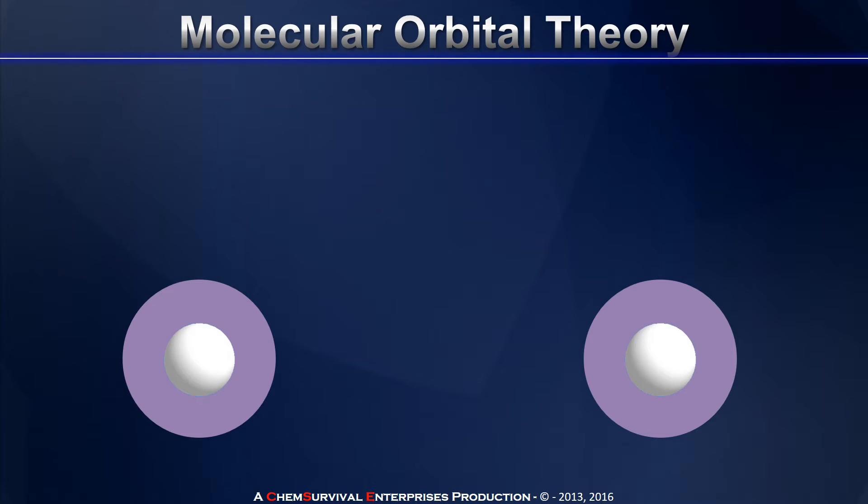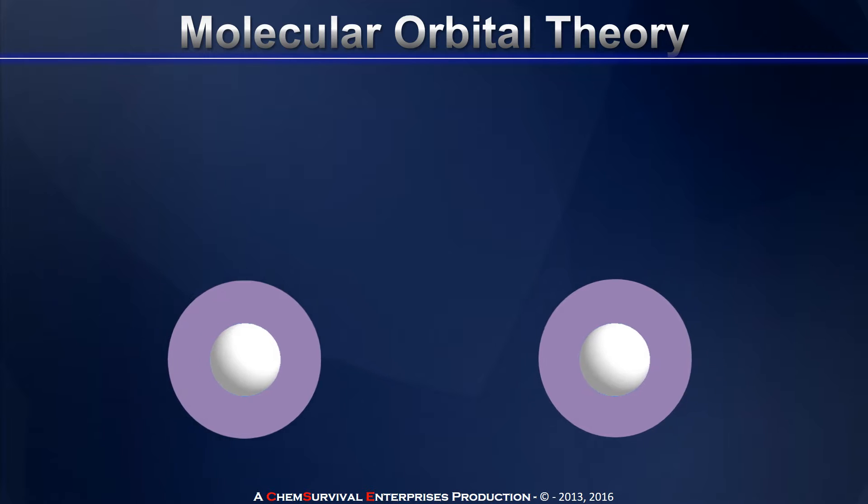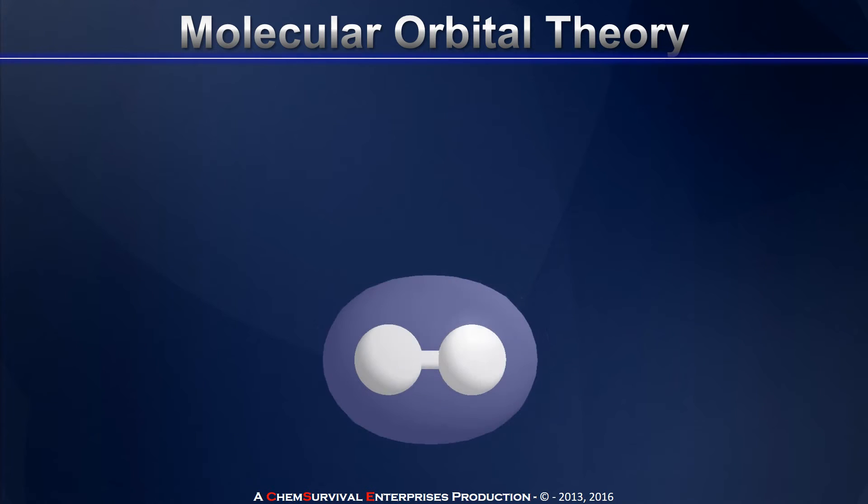But when two atomic orbitals combine to help form a chemical bond, something special happens. In the case of hydrogens, those two 1s subshells combine and form a region of space known as a sigma molecular orbital. And a sigma molecular orbital is a region of space where the electrons live generally in between the two hydrogen nuclei.